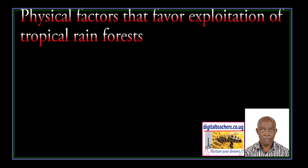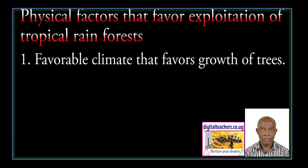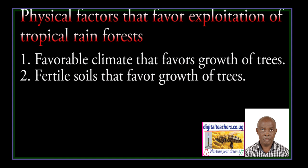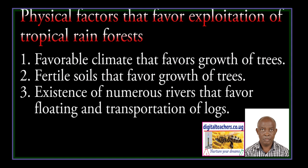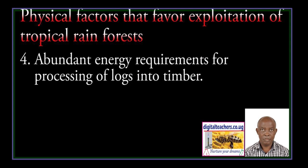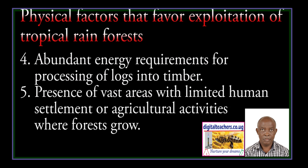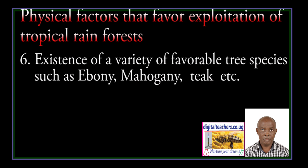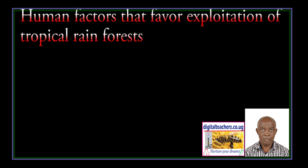Physical factors that favour exploitation of tropical rain forests: Favourable climate that favours growth of trees. Fertile soils that favour growth of trees. Existence of numerous rivers that favour floating and transportation of logs. Abundant energy requirements for processing of logs into timber. Presence of vast areas with limited human settlement or agriculture where forests grow. Existence of a variety of valuable tree species such as Ebony, Mahogany, Teak, and so on.